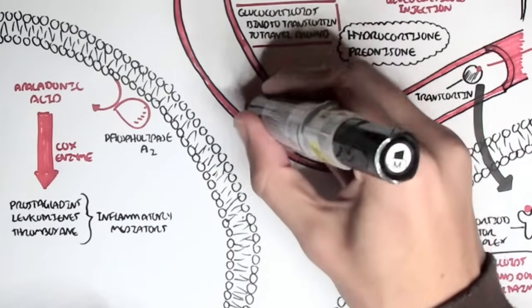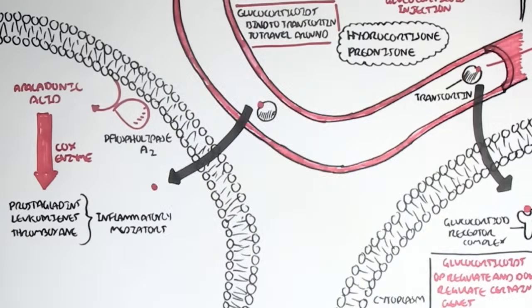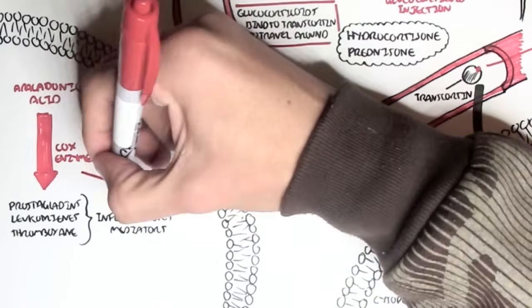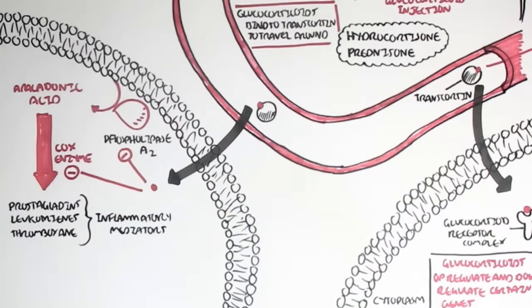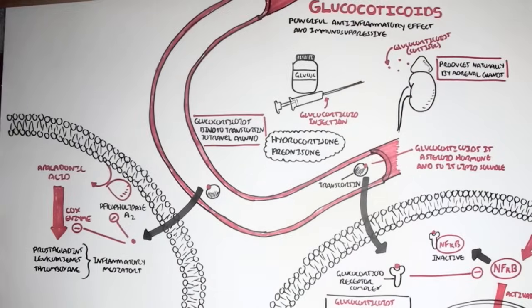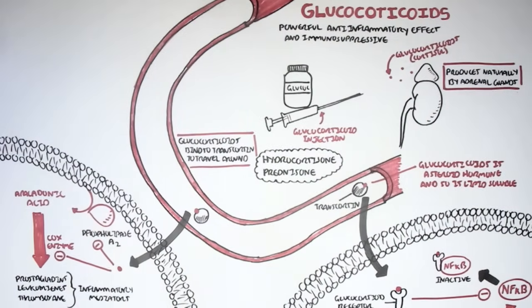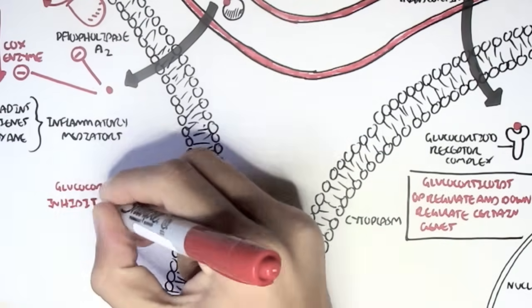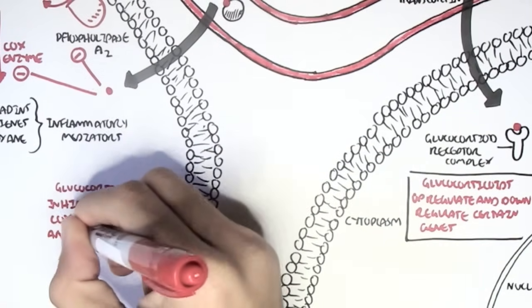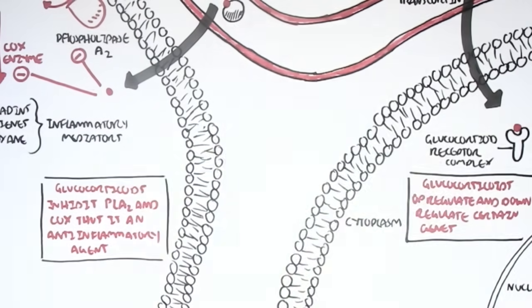What glucocorticoids do is that they will essentially enter the cell and inhibit the enzyme phospholipase A2 and COX enzyme, thus inhibiting the formation of inflammatory mediators. So glucocorticoids inhibits phospholipase A2 and COX, thus is an anti-inflammatory agent.